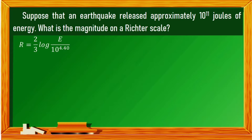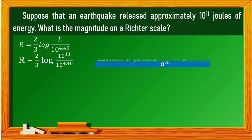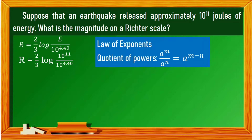To solve this, let us apply one of the laws of exponents: quotient of powers. This states that in dividing two powers with the same base, we subtract the exponents. 11 minus 4.40 is 6.6.